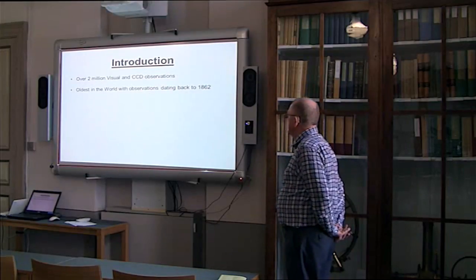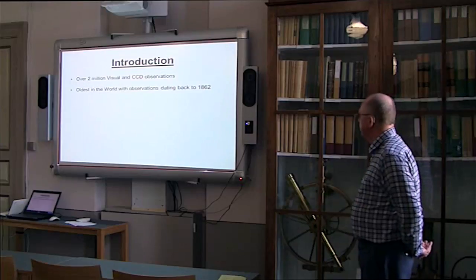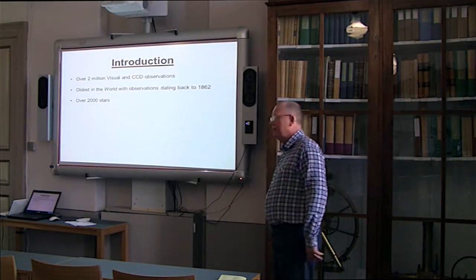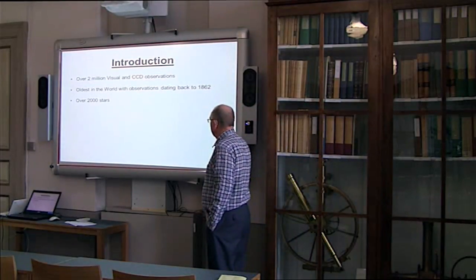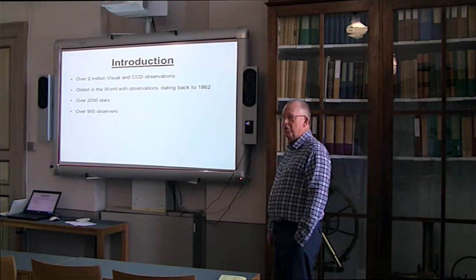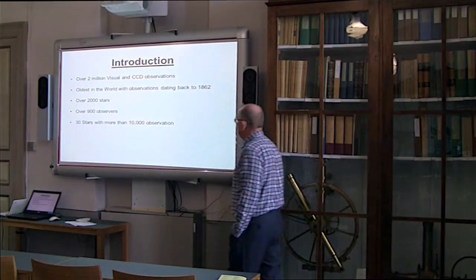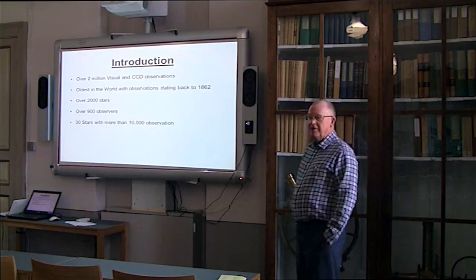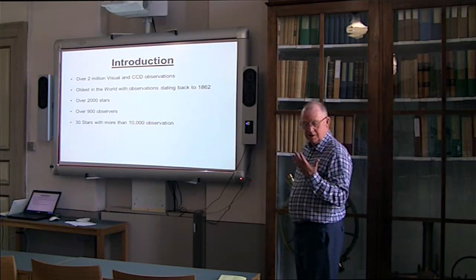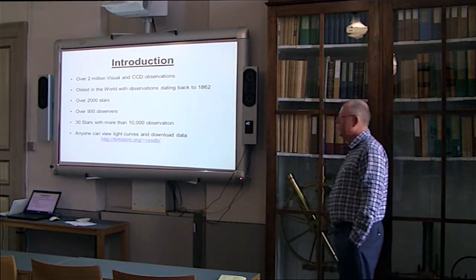We've had over two million visual and CCD observations. We are the oldest in the world with observations dating back to 1862. Over 2,000 stars are monitored. We have over 900 observers. Quite a few of the observers have over 100,000 observations. What we do is we have a variable star of the year, and this year it is RR Tori. Anyone can download data.